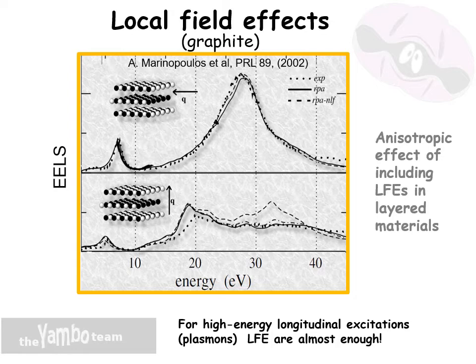Looking at high-energy longitudinal excitations — the plasmons — as you can see here, the local field effects are almost enough to recover good agreement with the experimental energy loss data. And for systems with a clear spatial anisotropy in the charge distribution, like graphite, the local field effects also have quite anisotropic behavior, being quite small for transfer momenta parallel to the plane and quite large for transfer momenta perpendicular to the plane.